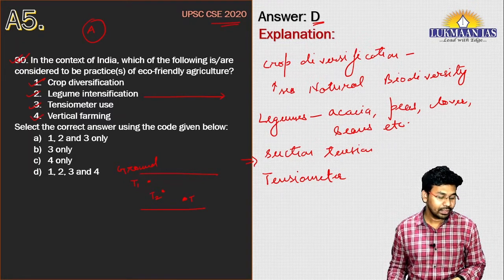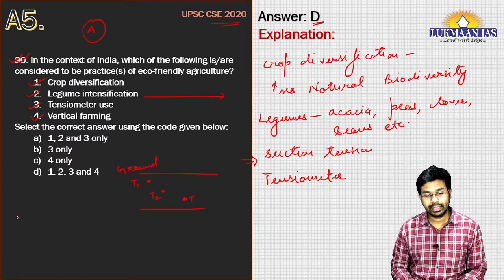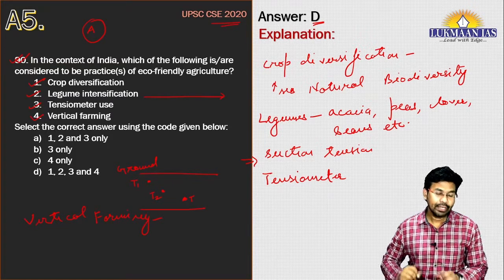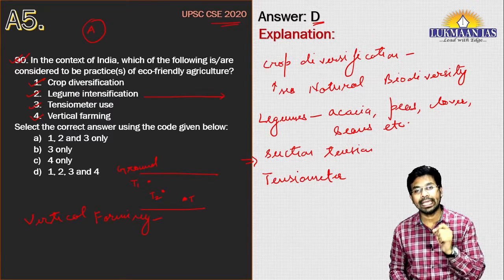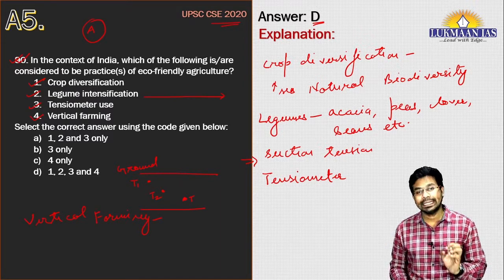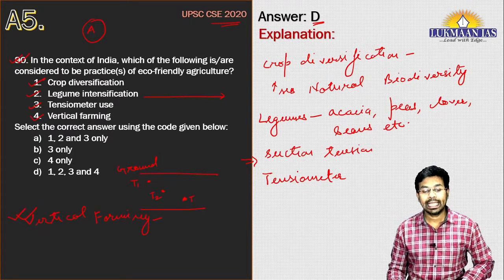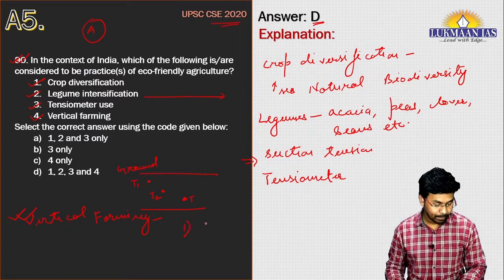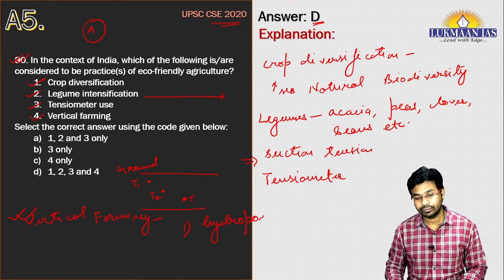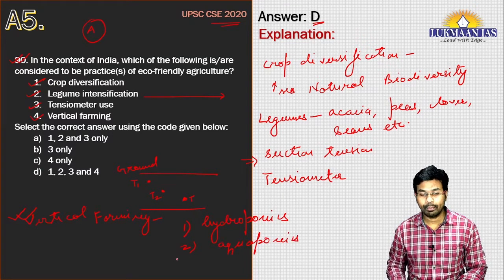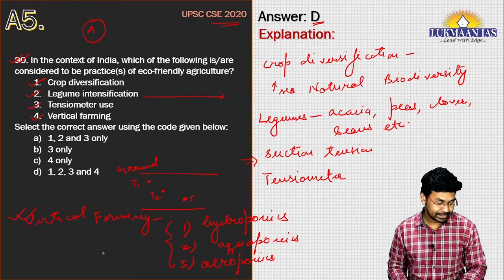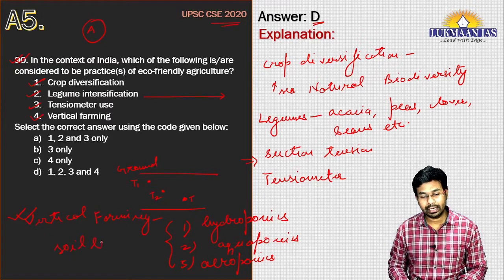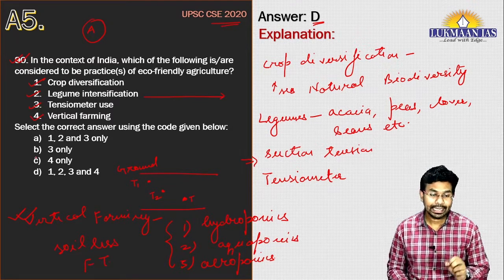Vertical farming means growing crops in vertically stacked layers. It incorporates controlled environment agriculture and employs soilless farming techniques such as hydroponics, aquaponics, and aeroponics. The correct answer for this eco-friendly agriculture question is option D.